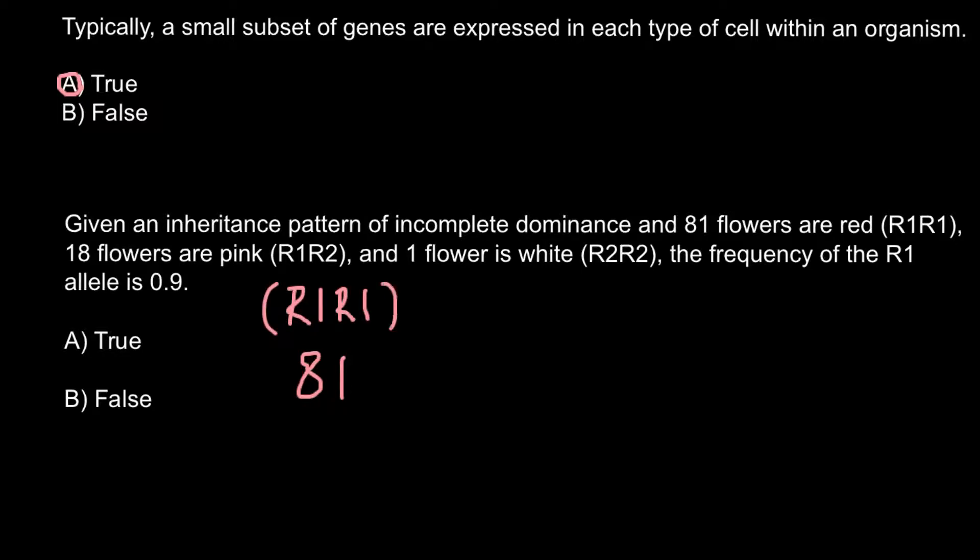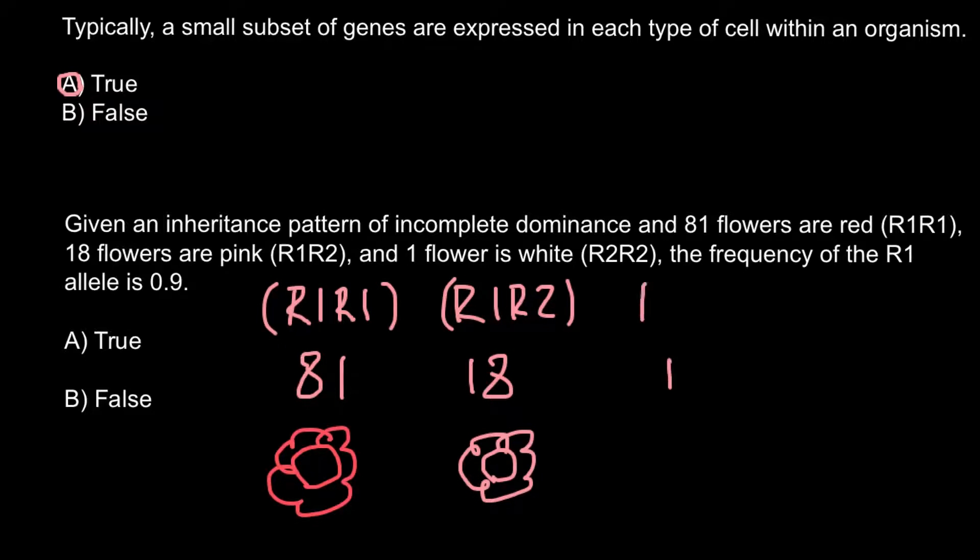We also have 18 pink flowers, genotype R1R2. And we have one flower with genotype R2R2, which is a white flowered plant.